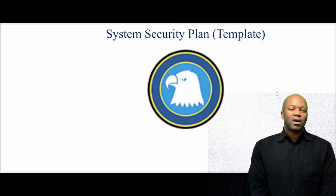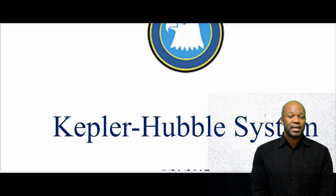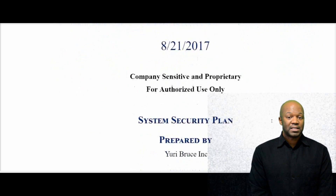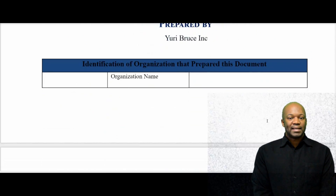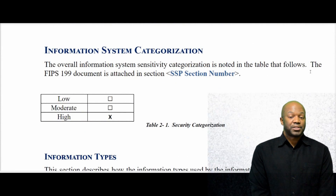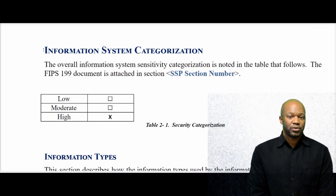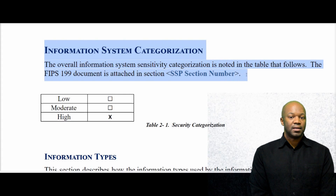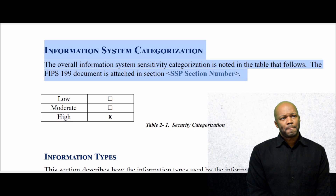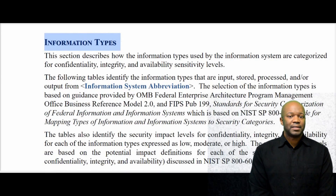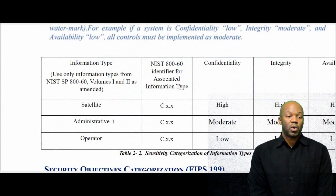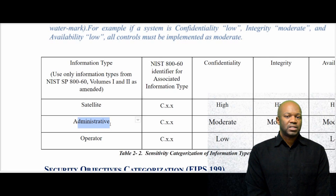Being a high-impact system means that if this system gets taken out by attackers — say they do a denial-of-service attack on it — it will negatively impact the National Science Foundation. They won't be able to send critical data out to different agencies that really need this Kepler and Hubble data for their research, so that's why it's a high-impact system. We're also going to document the types of information needed for the system. We have administrative data required to create accounts and manage access — we'll set that to moderate.